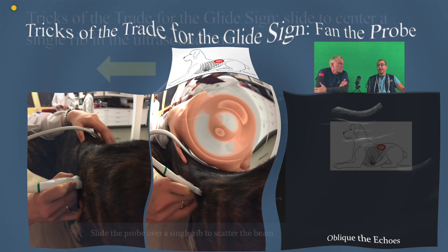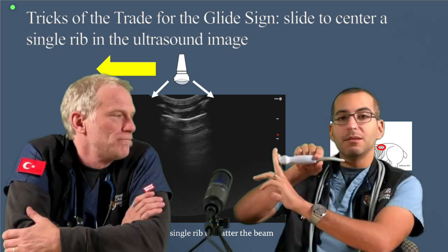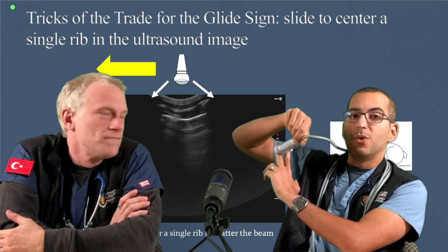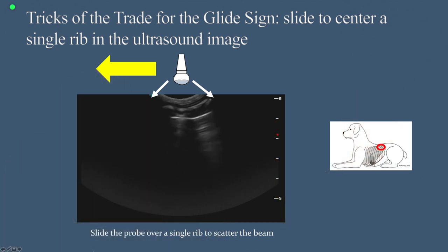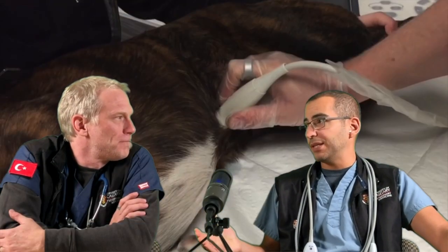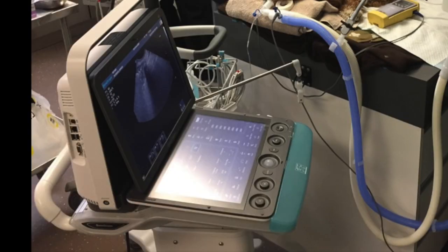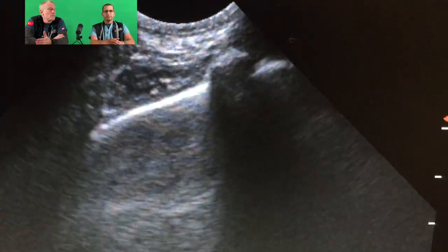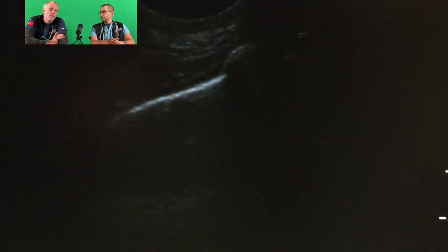Sometimes you don't even have to change the angle that much. Another trick is to take that probe and instead of sitting between the two ribs, move it over one rib — that gives the effect of seeing the glide on either side of that rib. Especially at the edges of the image you get a much nicer glide sign because it becomes more grainy. Also, if you're moving from the abdomen to the thorax, do keep in mind that you want to change your machine settings — decrease the gain as you come off the abdomen so that the pleural line becomes more grainy and the glide sign is more evident.